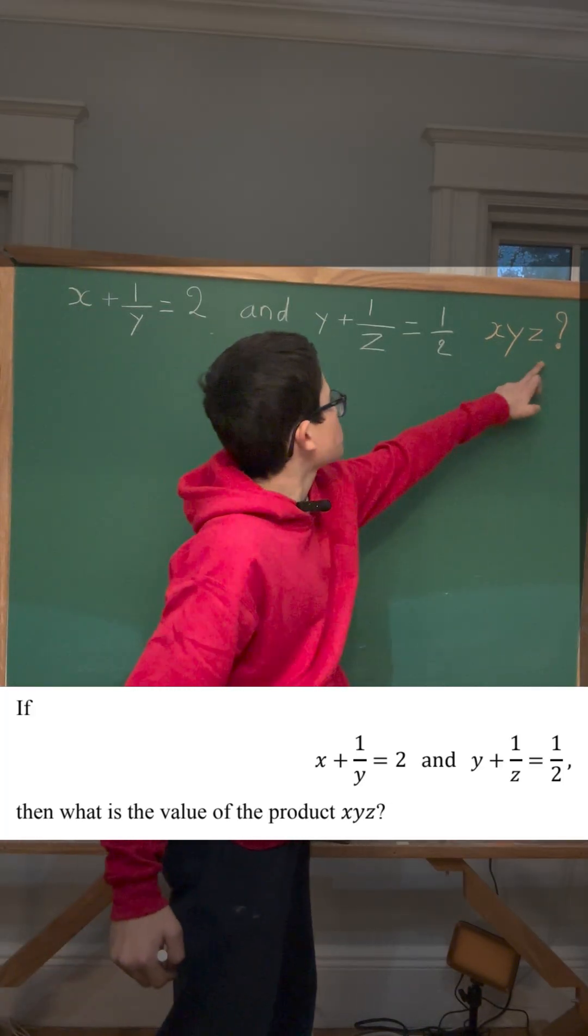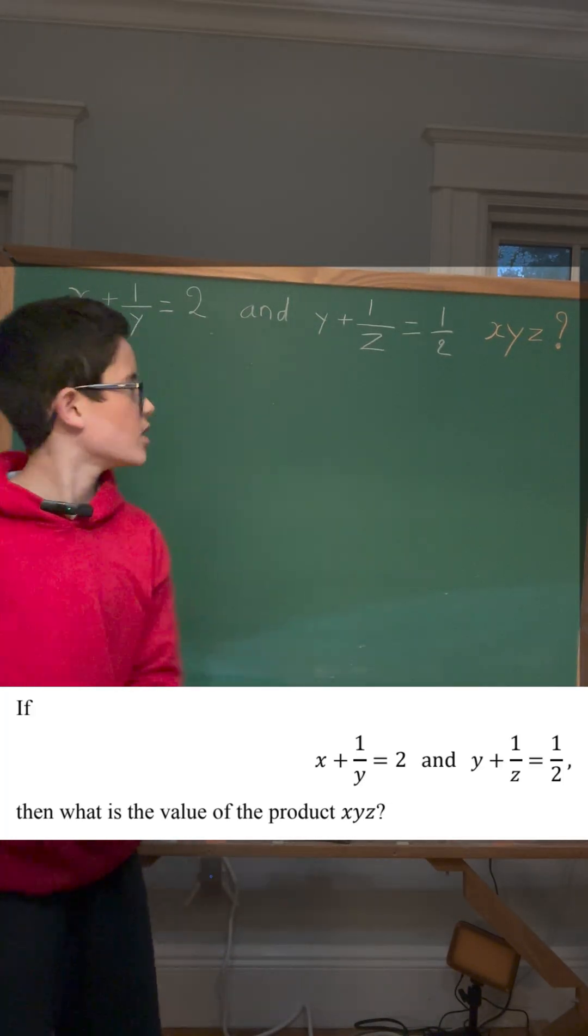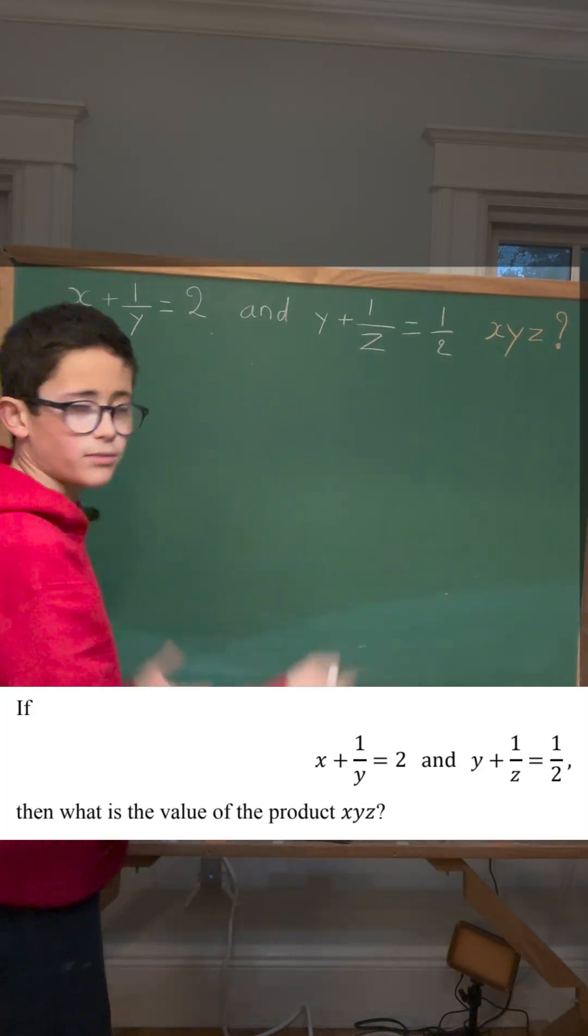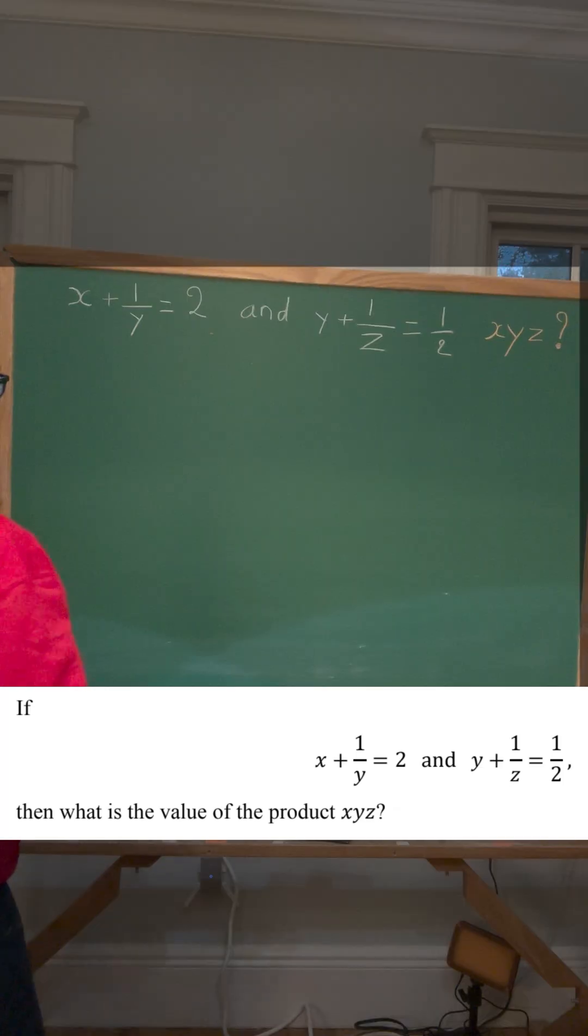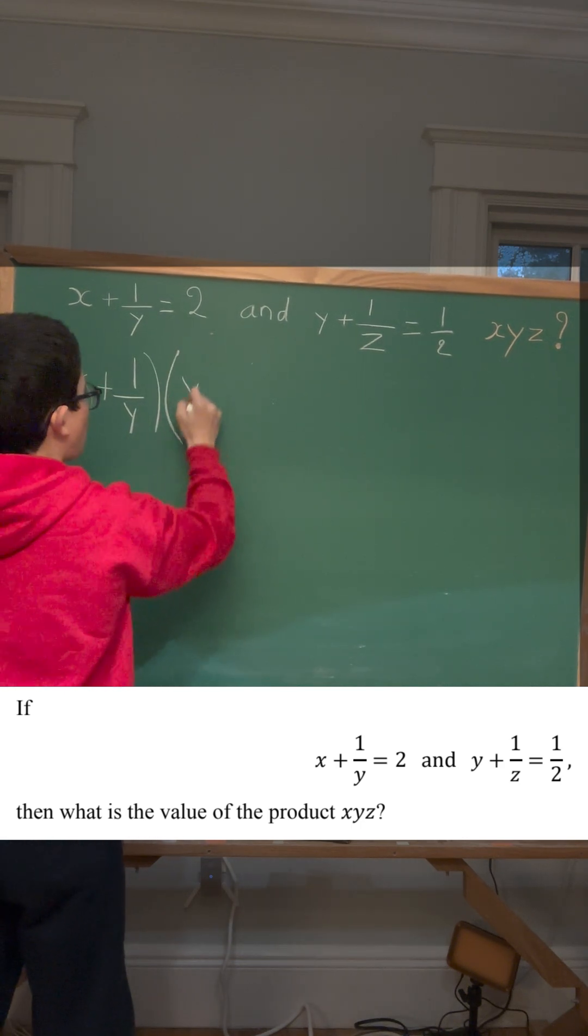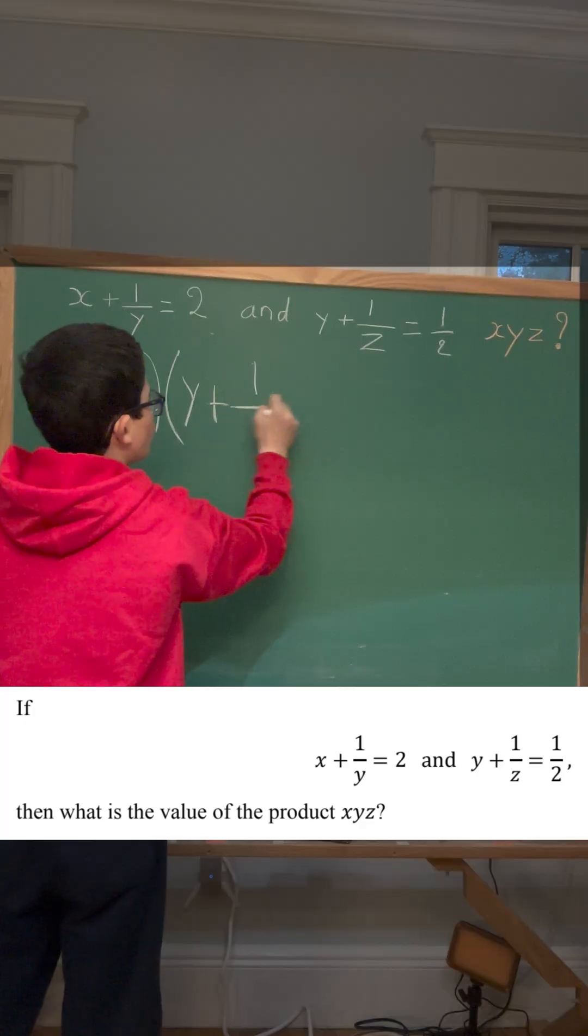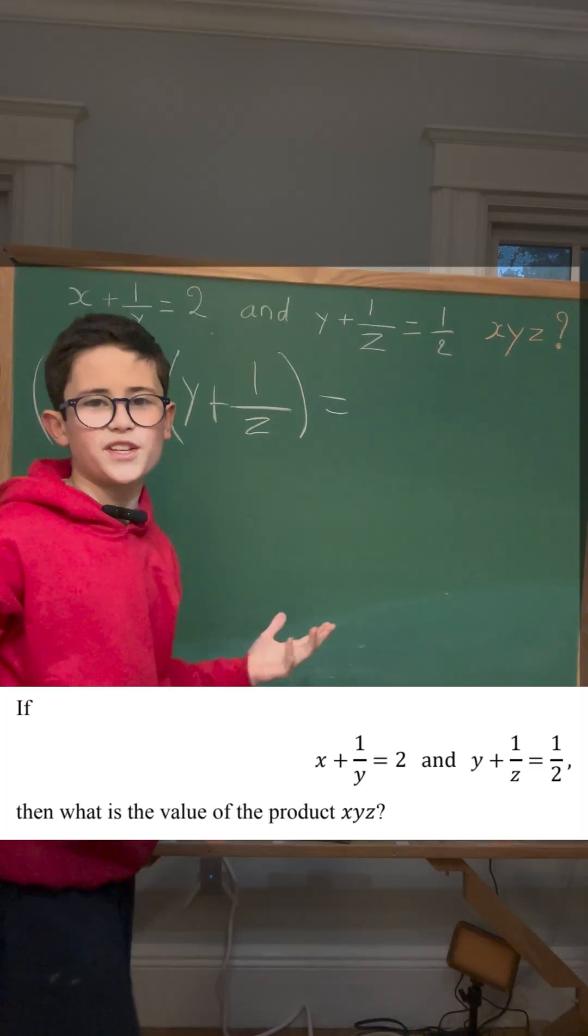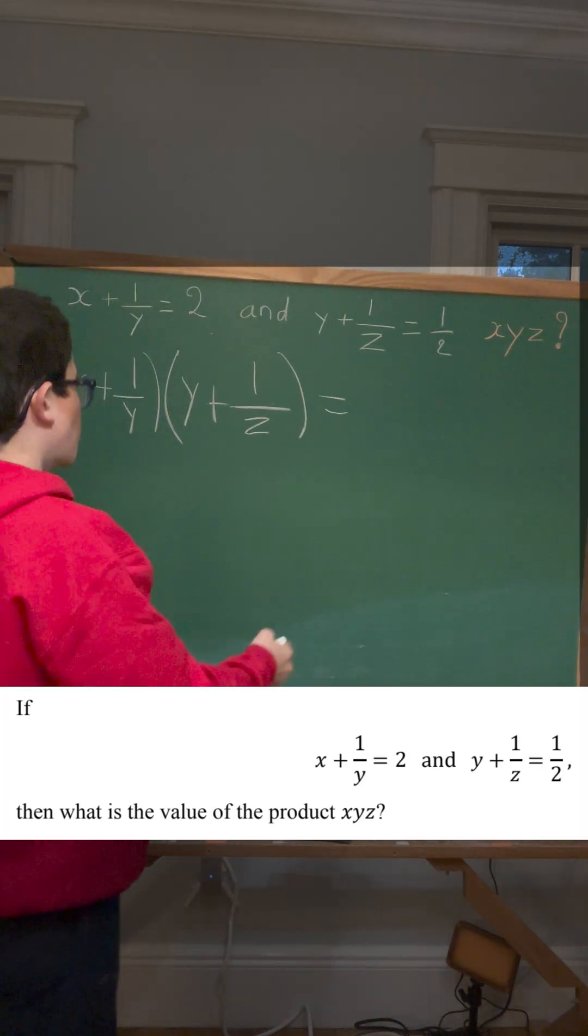We know that xyz is a product, so by intuition, we are going to multiply the left side of these two equations together, and the right side of them together. It would be x plus 1 over y, parentheses, times y plus 1 over z, and 2 times 1 half is 2 over 2, which equals 1.